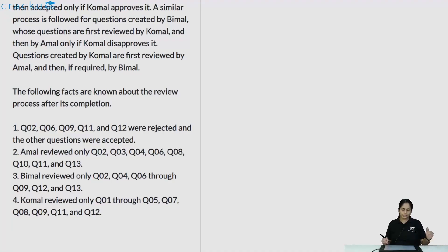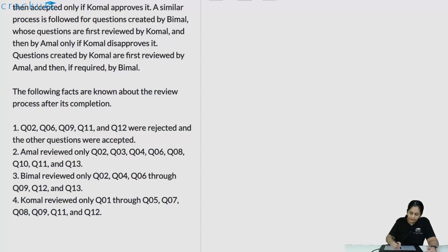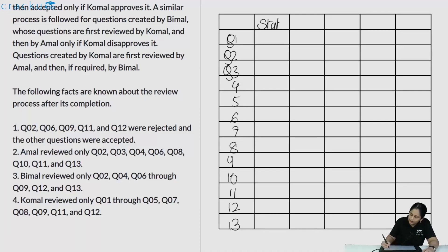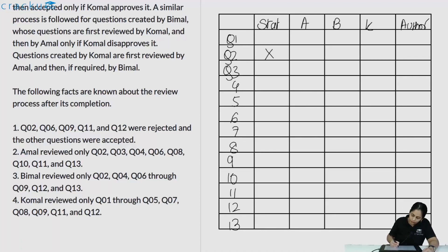The following facts are known: Q2, Q6, Q9, Q11 and Q12 were rejected; all other questions were accepted. Let us draw a table with 13 questions, their accepted/rejected status, and which reviewers (Amal, Bimal, Komal) saw each question. Amal reviewed Q2, Q3, Q4, Q6, Q8, Q10, Q11, Q13. Bimal reviewed Q1, Q2, Q3, Q7, Q8. Komal reviewed Q1 through Q5, Q7, Q8, Q9. Now using the process rules, let us determine who authored each question.